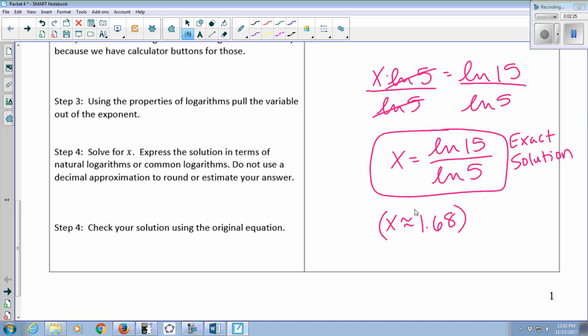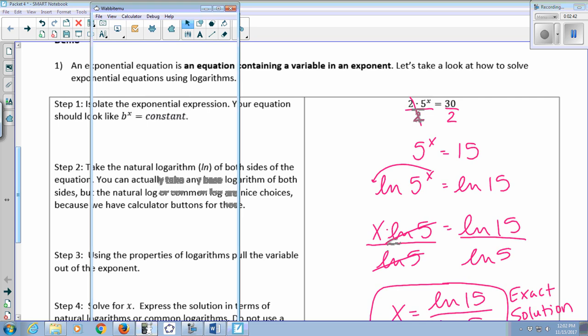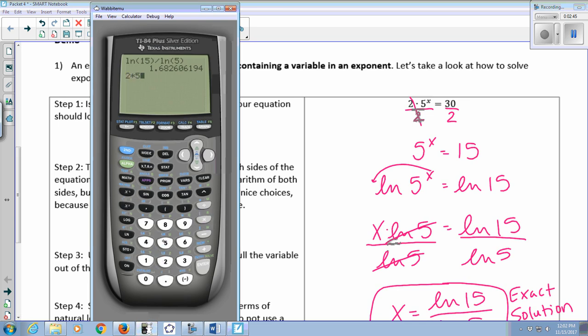But this is an approximate answer, not what was asked for. It says do not use a decimal approximation, do not round. Check your solution in the original equation. So that's what the 1.68 is useful for. If we go back up to our original equation and we type 2 times 5 to the 1.68, we're hopeful that we should get something very close to 30. It's not going to be exact because we rounded that 1.68, but 29.87 is very close to 30. So that seems like it worked out well.